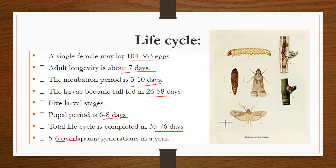Coming to the life history: a single adult female lays 100 to 363 eggs. The adult longevity is 7 days and the incubation period of the egg is 3 to 10 days depending on the climate. The complete larval life ends in 26 to 58 days, and the larva contains 5 larval stages. After the larval stage it converts into the pupa; the pupal period is 6 to 8 days. The total life cycle completes within 35 to 76 days and it contains 5 to 6 overlapping generations.